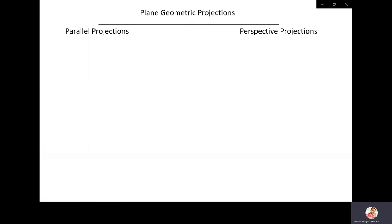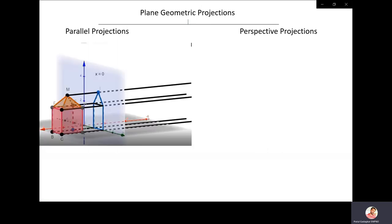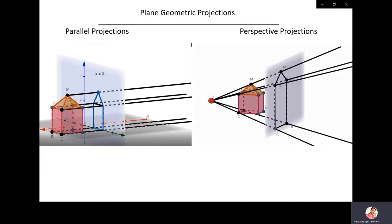There are two types of projections. One is parallel projection and the other is perspective projection. In parallel projection, the center of projection is located at infinity, so these rays are coming from infinity — they hit the object and then fall on the plane of projection. In perspective projection, the center of projection J is located at a finite distance from the object.